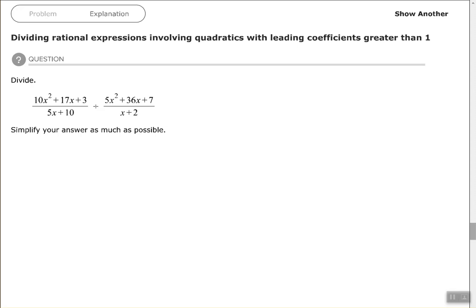So you're going to multiply the first fraction times the reciprocal of the second fraction, and then factor and simplify. Okay, so let's go through that process. First of all, rewrite it as a multiplication problem.